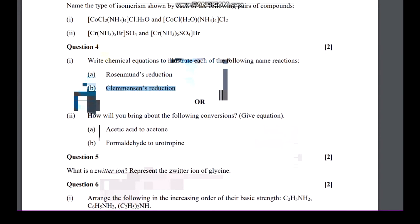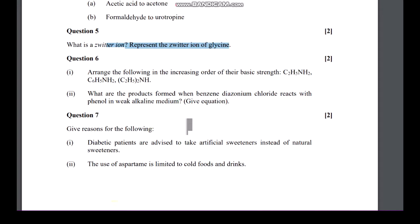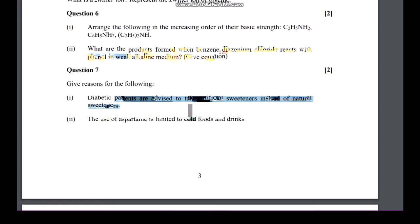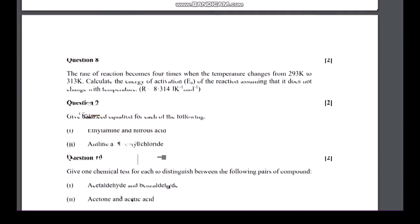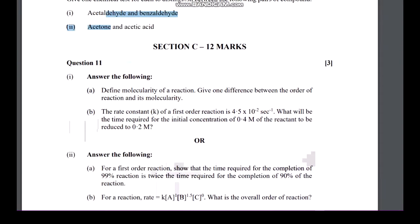Assertion reason, colloidal state adsorption question, coordination compound, then very well-known reaction - Clemmensen and Rosenmund reaction, acid to acetone, formaldehyde to urotropin conversion. What is urotropin - basic question from carbohydrates. Then we have amine, basicity of amine, diazonium chloride. Diabetic patients are advised to take artificial sweetener - this is from daily life chemistry.